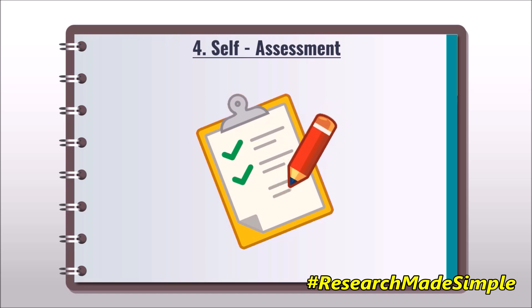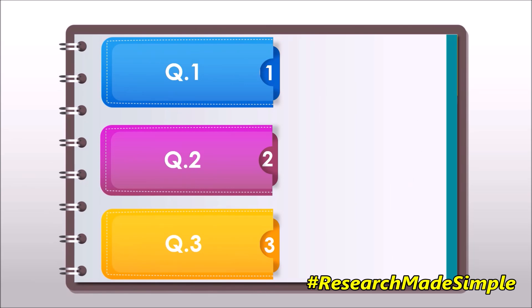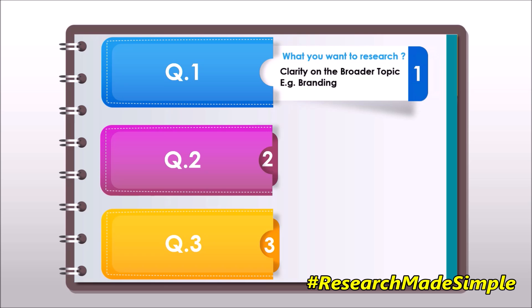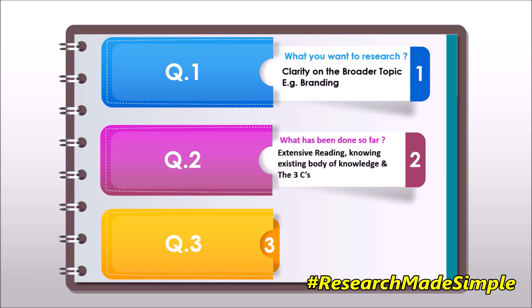The fourth step is self-assessment, which includes three different questions. The first question is: what do you want to research? You need to mention the clarity on the broader research topic — for example, a researcher's broader research topic is branding. The second question is: what has been done so far in that specific broader topic? For this, extensive reading and knowing the existing body of knowledge is very important, and we need to study the three C's — constructs, context, and conclusion.